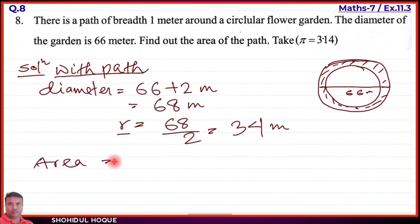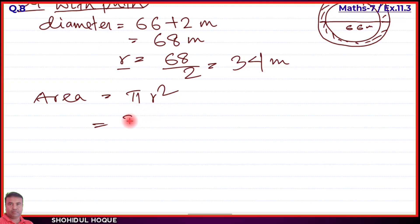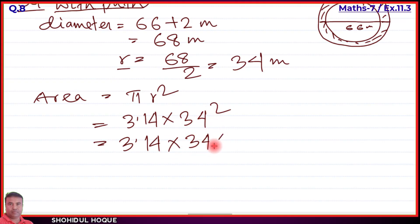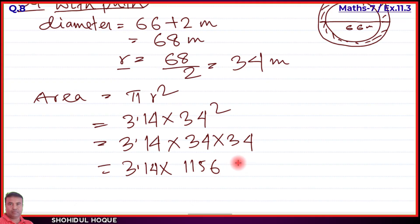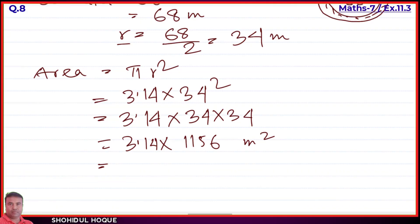The area formula is π r squared. From the question, π equals 3.14, and r equals 34. So area equals 3.14 into 34 squared. 34 squared means 34 into 34. Let me do this calculation: 3.14 into 34 into 34. I will work this out carefully so there are no mistakes. The result is 3629.84 square meters.